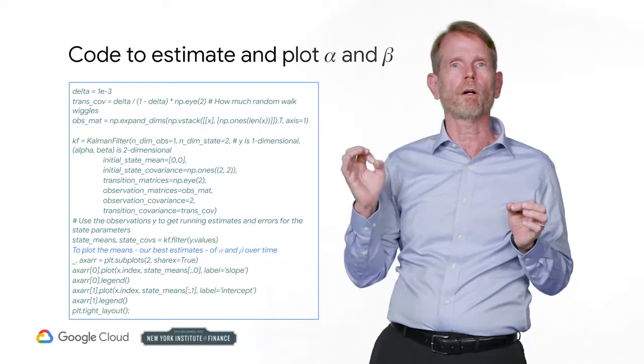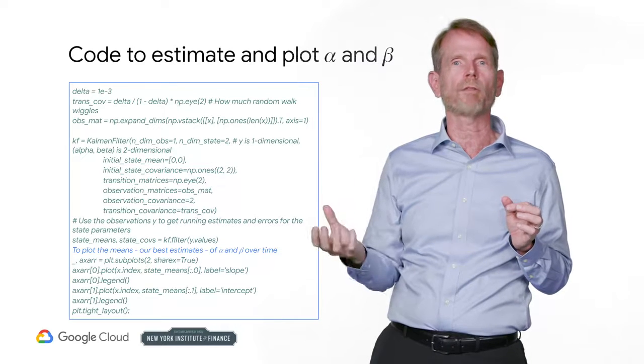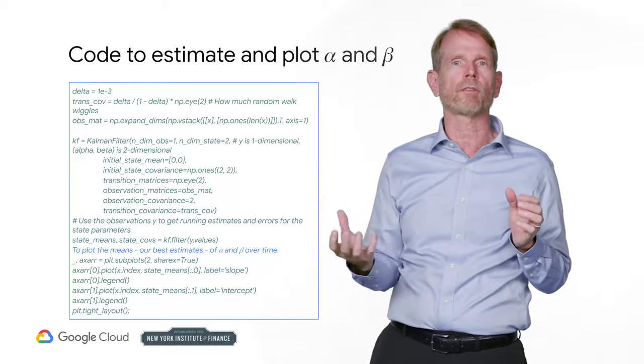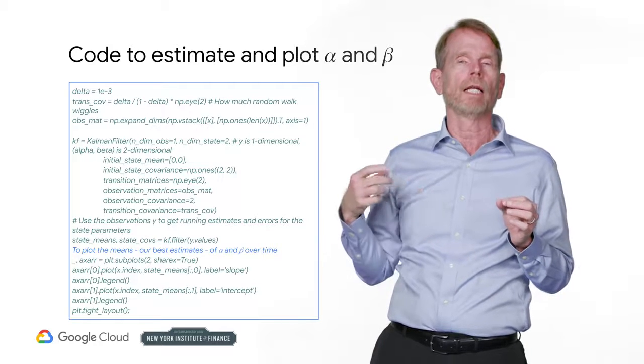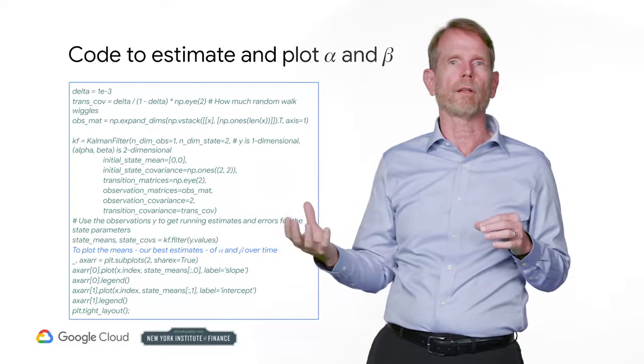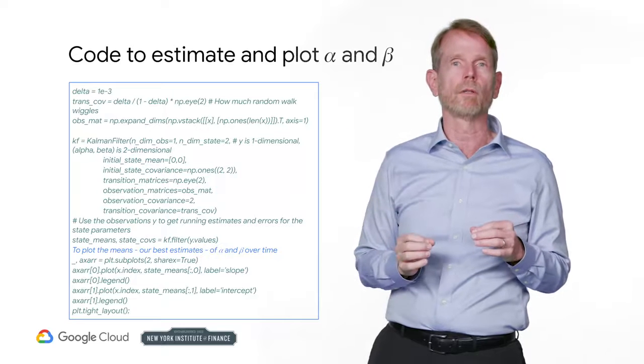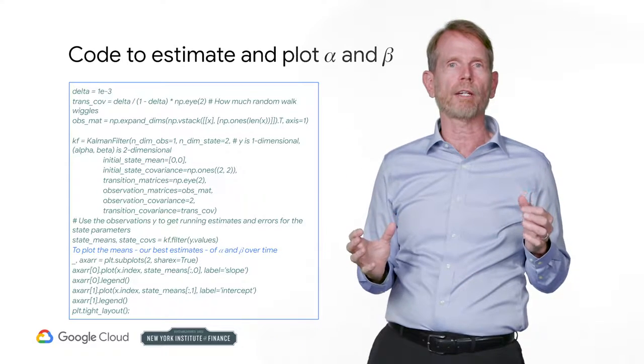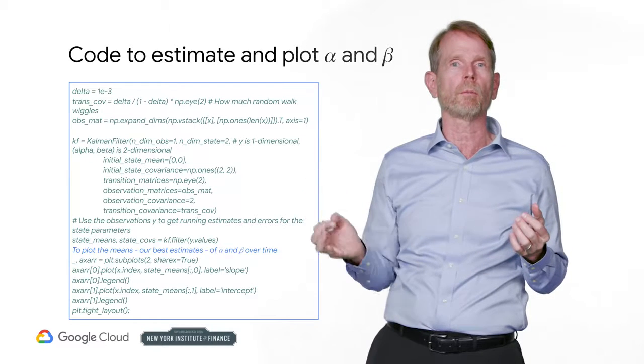Please use the code above to model randomness in the series and construct a Kalman filter to evolve our estimates of the parameters alpha and beta for Apple and SPY. We assume that the variance of our observations y is 2.